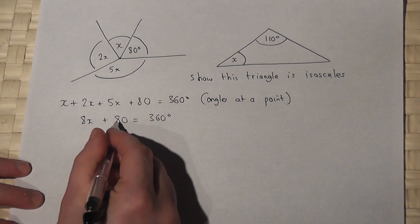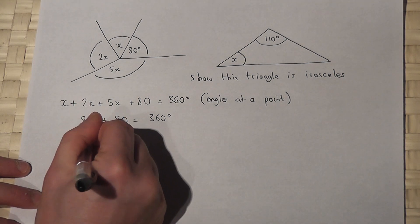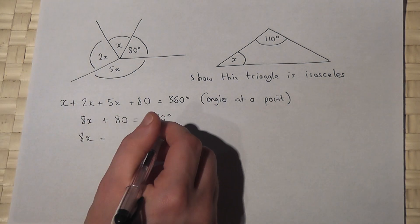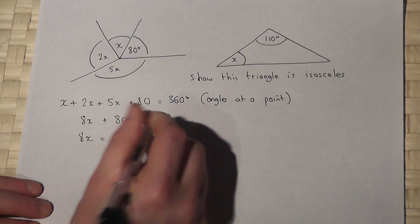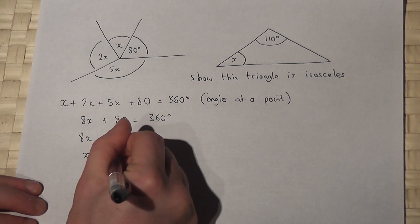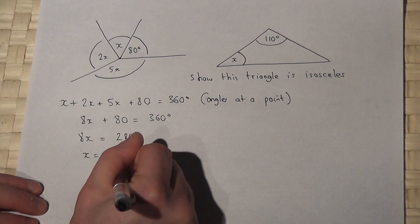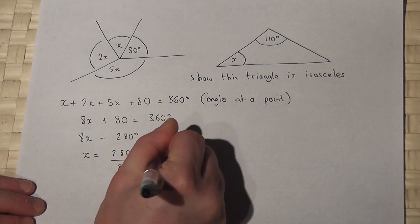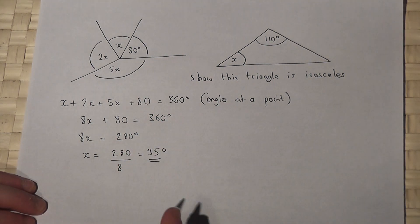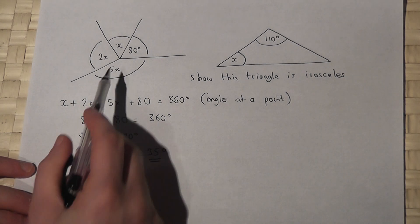So if I subtract 80, I get 8X equals 360 minus 80, which is 280 degrees, and then X is just 280 divided by 8, which equals 35. So I have found X to be 35.